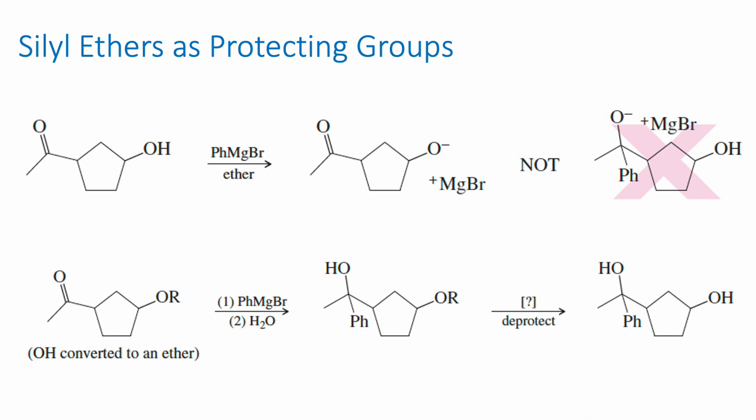However, what will actually happen is that the Grignard reagent will just deprotonate the alcohol. Organometallic reagents are incompatible with protons — they are very strong bases, and if there's any acidic proton in the molecule, the organometallic will attack the acidic proton instead of the electrophilic carbon. So the desired delivery of the phenyl group to the carbonyl does not occur.